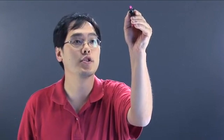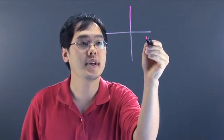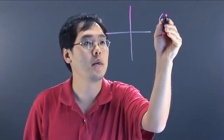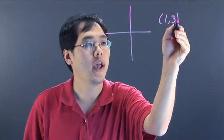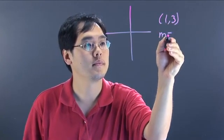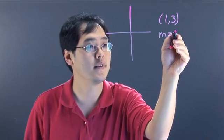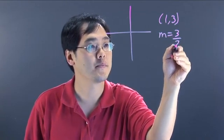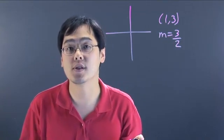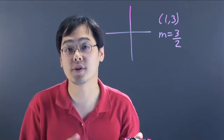Now one scenario you might run into is you might be given a point, let's just say (1, 3), and you're given the slope, let's just say, remember m is for slope, let's just say of 3/2. Now what that means first is you want to graph the point and then use the slope to get to the next point.